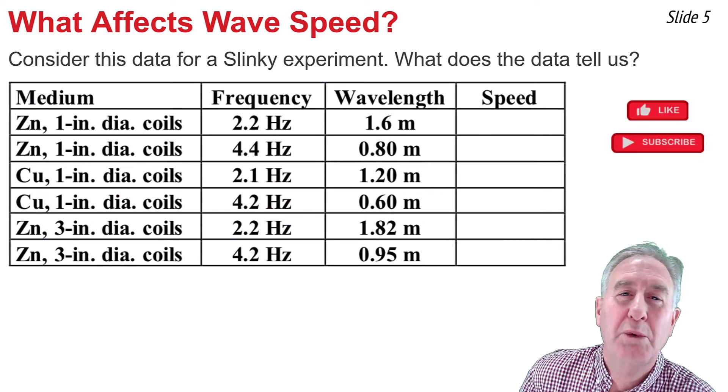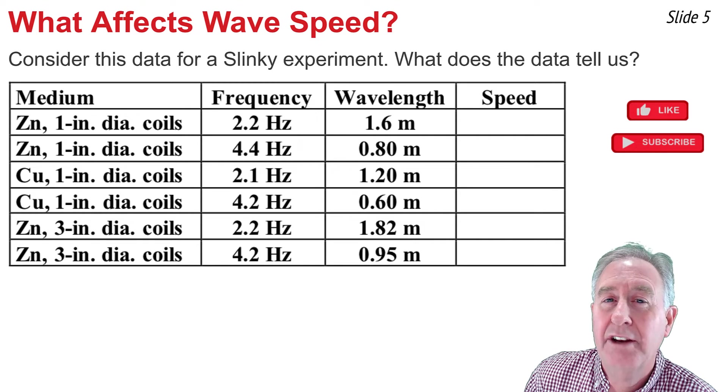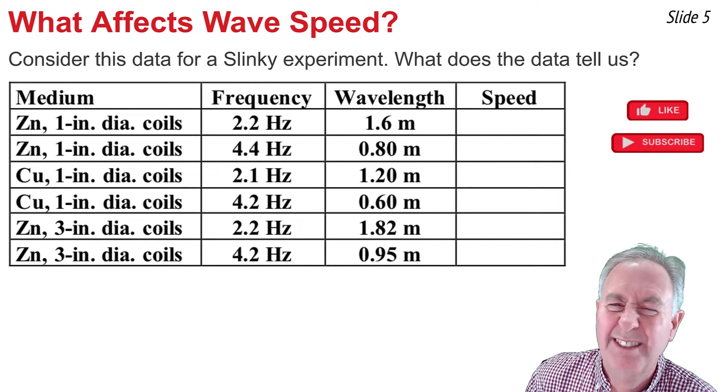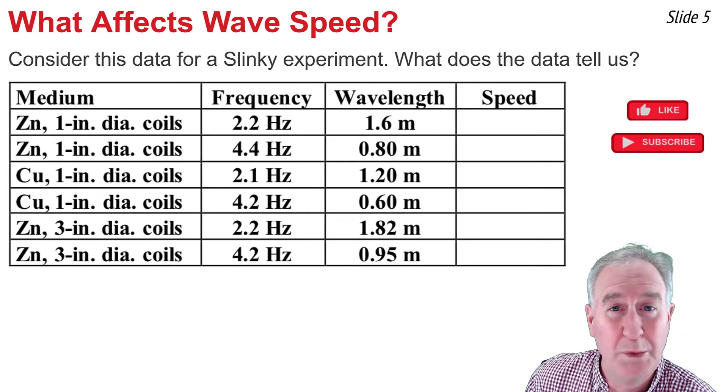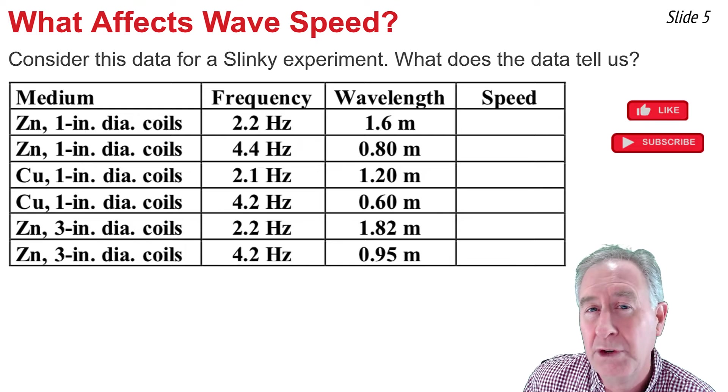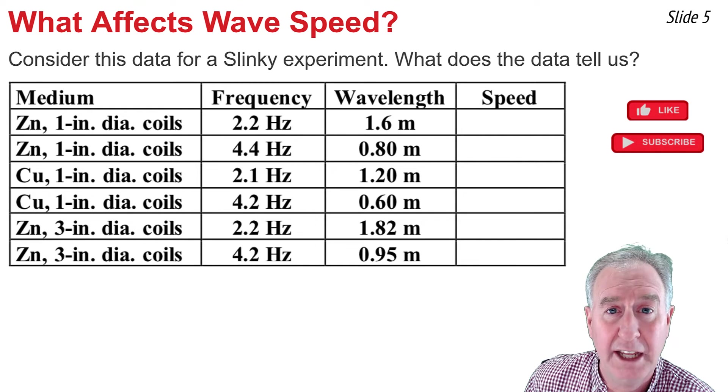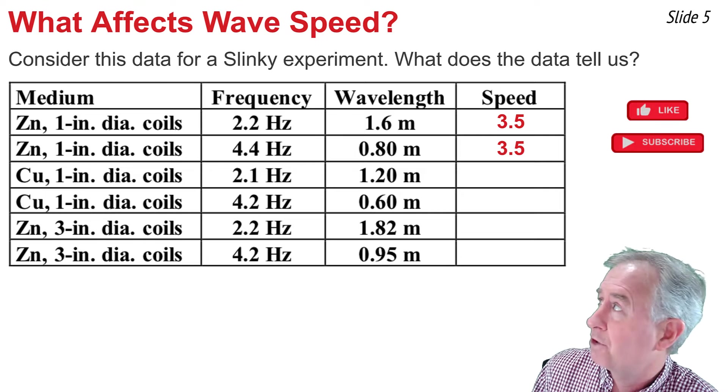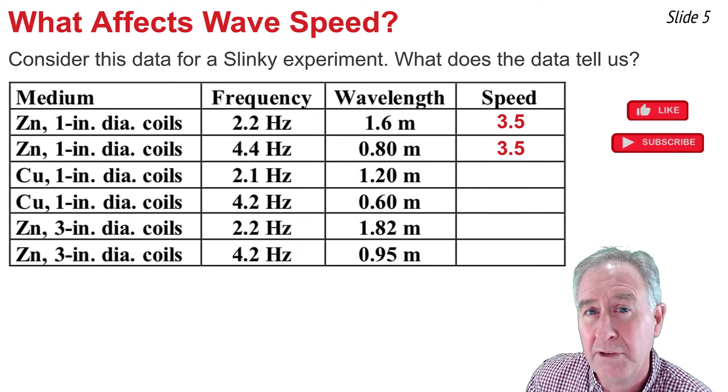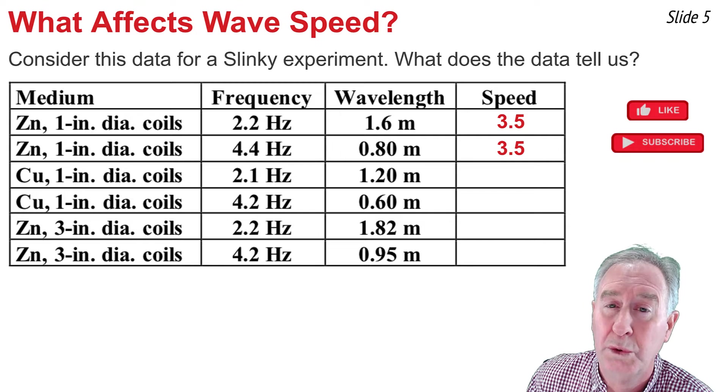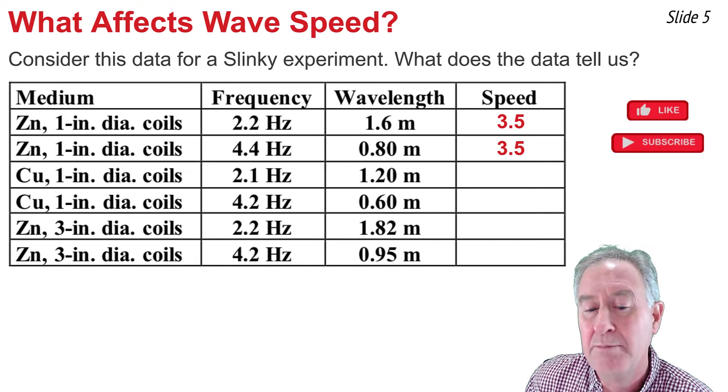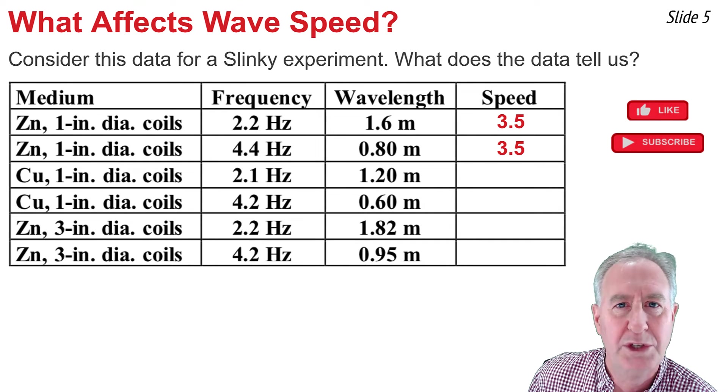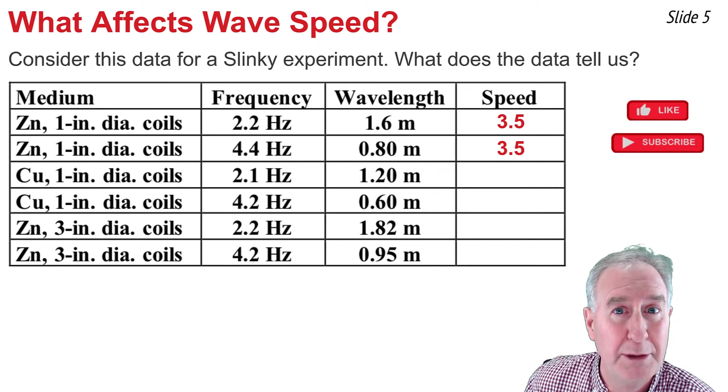Some students are doing a wave experiment using three different slinkies. They shake it at different frequencies, they measure the wavelength, and now they have to calculate the speed. We'll do those calculations, but as we do, we want to answer the question, what does the data tell us? So on the first two rows, I'm going to go V equal F lambda for the data given, and when I do, I get the values of 3.5 meters per second for the speed. It's the same value in row 1 and row 2. You'll notice that the frequency changed dramatically, so did the wavelength, but the speed stayed the same. It stayed the same maybe because the medium was kept constant. Maybe speed depends upon the medium.